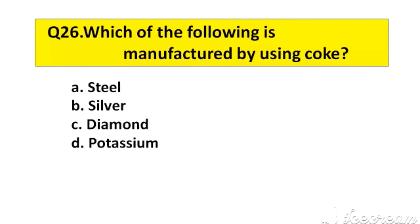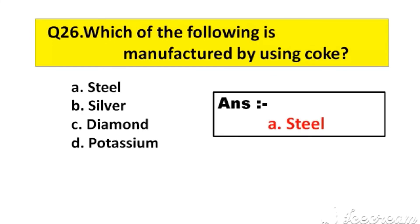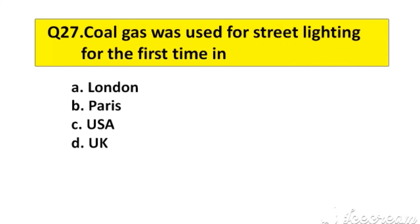Question number 26. Which of the following is manufactured by using coke? Option A: Steel, B: Silver, C: Diamond, D: Potassium. The right answer is option A: Steel.